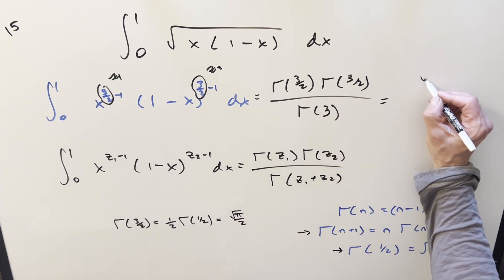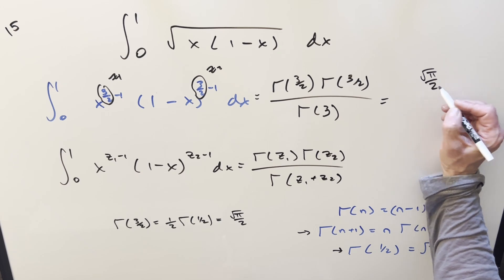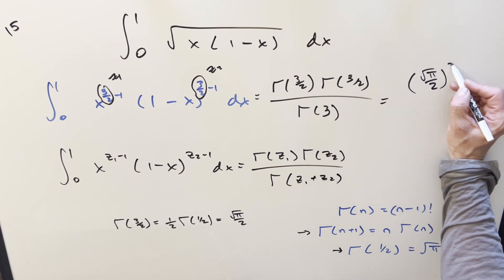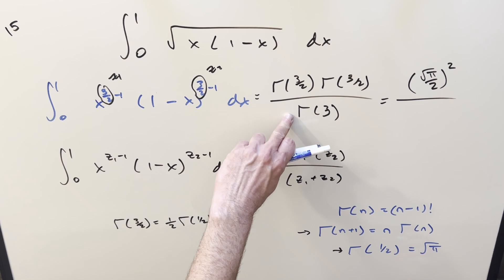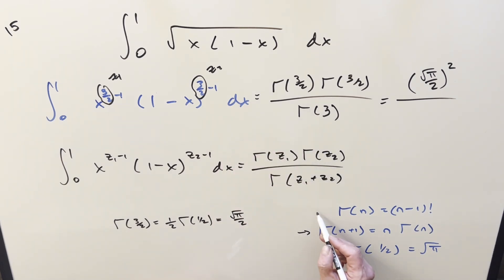So putting this numerator together, we get square root of pi over 2, but we've got two of them, so this is going to be squared. And then for gamma 3, we can come down and use this first formula, reduce it by 1, take the factorial. So this is going to be the same thing as 2 factorial.